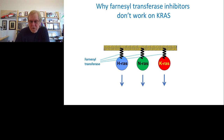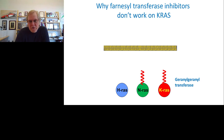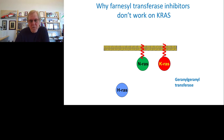Many very potent inhibitors of farnesyltransferase were developed to block RAS signaling by preventing membrane localization. Unfortunately, it turns out that the two RAS proteins that play the major role in human cancer — KRAS and NRAS — can be modified by a backup system called geranylgeranyltransferase. So when you block farnesylation, geranylgeranyltransferase takes over and the RAS proteins can continue causing cancer.